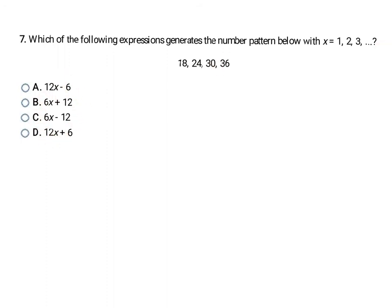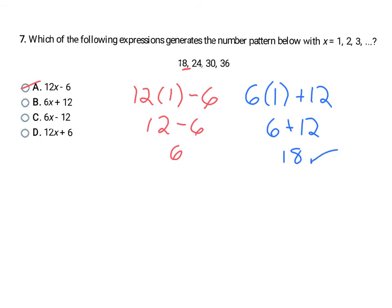So here I can look at my options and just try each one of them out. The first one is saying if I have 12 and I multiply that times 1 and then subtract 6, will that get me to 18? Well 12 times 1 is 12, 12 minus 6 is 6, so that does not get me to the first term 18, so it can't be A. So now I'm going to try B. I'm going to take 6 times 1 plus 12, and since I substituted in a 1 I'm hoping that gets me to that first term 18. So 6 times 1 is 6 plus 12 is 18. So that one checks out.